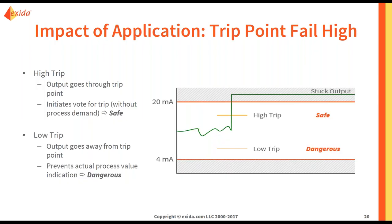Let's say your trip point is a high trip point. In this case, the output goes through the trip point for a fail high. This initiates a vote for trip without a process demand or a hazard to your system, and so this is a safe failure. However, if you have a low trip, the output goes away from the trip point. This prevents the actual process value indication, and this is a dangerous failure. Your plant is not tripping, but your safety instrumented function can no longer respond to the hazardous scenario.